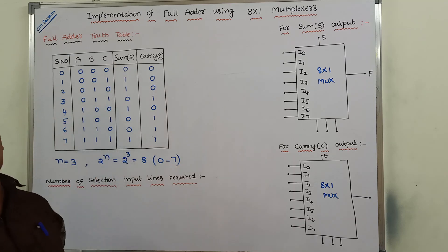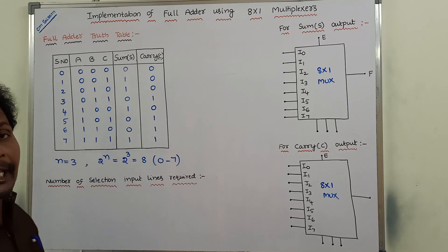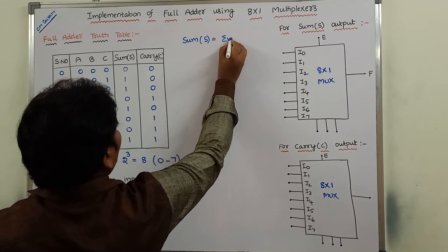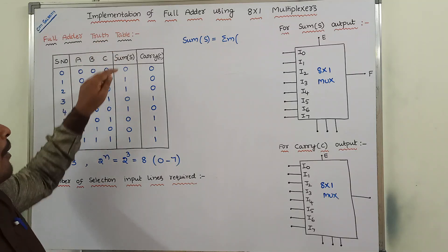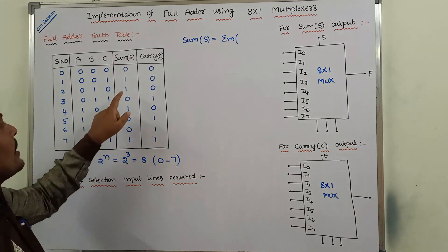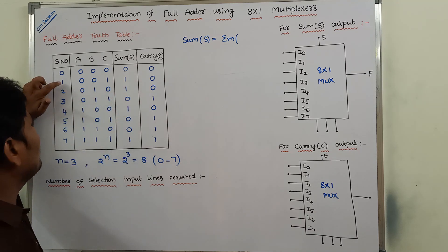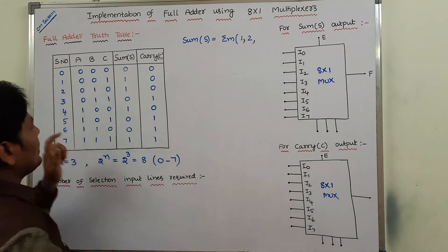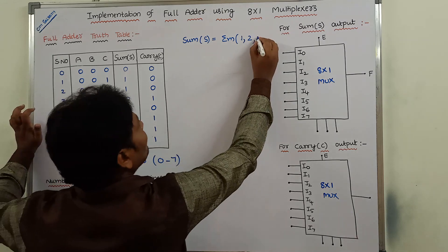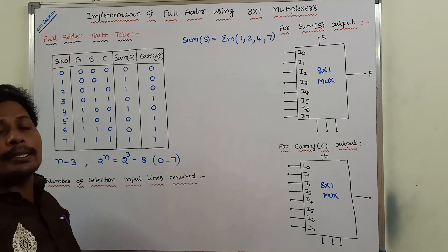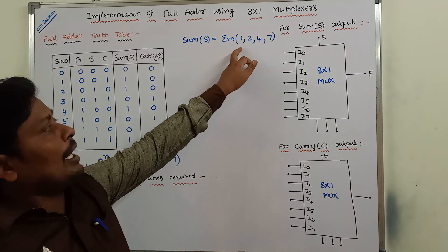Once we get the sum values and carry values, we have to write the min terms. Sum is equal to sigma m of — observe the sum column where the ones are present; the corresponding min term numbers are written. In the sum column, 1 is present at min term 1, min term 2, min term 4, and min term 7. So the output variable sum can be represented as sum of min terms: Σm(1, 2, 4, 7).